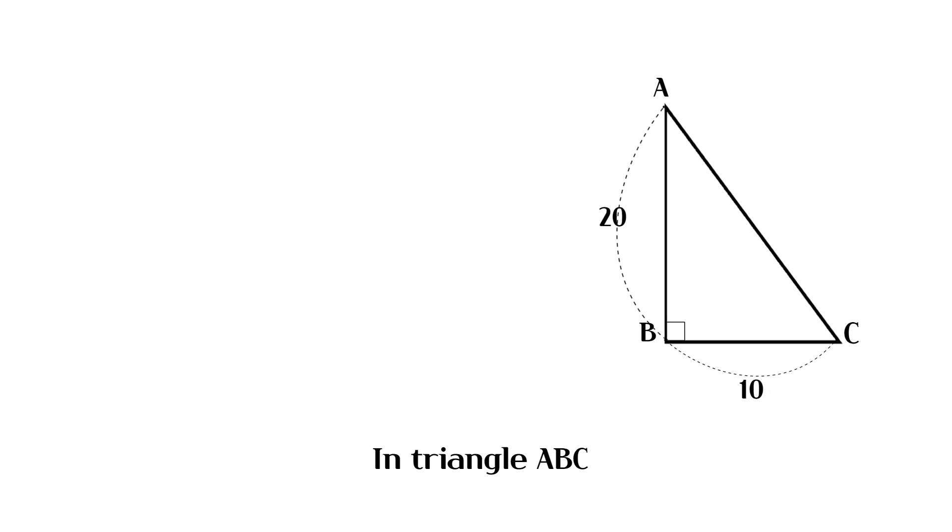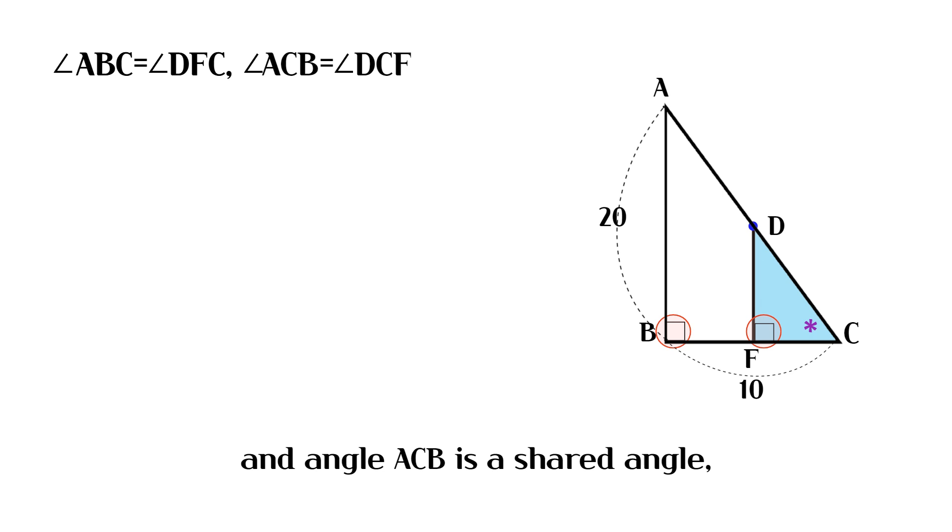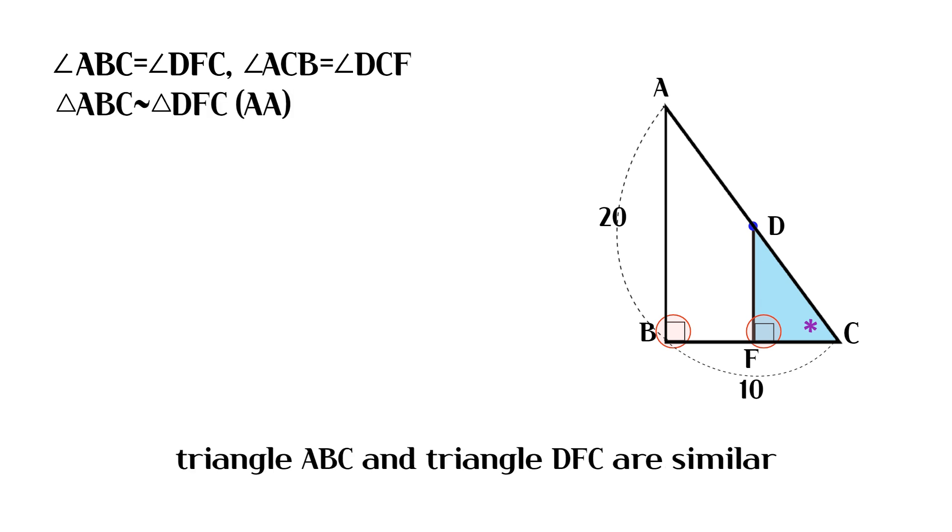In triangle ABC and triangle DFC, angle ABC and angle DFC are right angles, and angle ACB is a shared angle. So by the AA similarity theorem, triangle ABC and triangle DFC are similar.